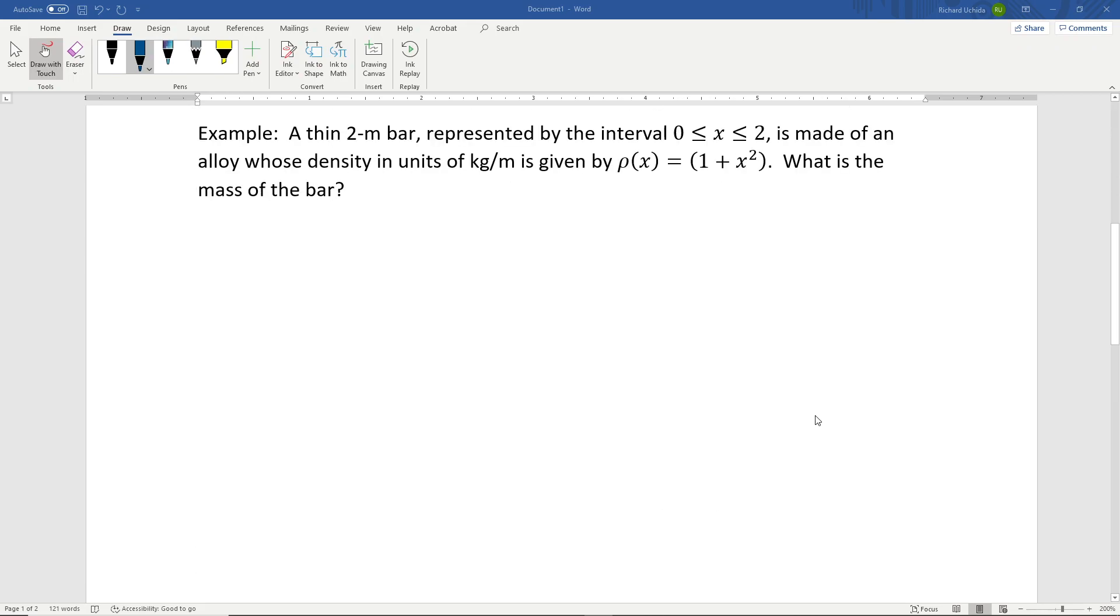Let's look at an example. If we have a thin 2-meter bar represented by the interval x from 0 to 2, made of an alloy whose density in kilograms per meter is given by ρ(x) = 1 + x², what is the mass of the object?